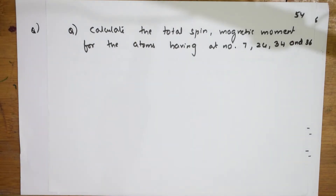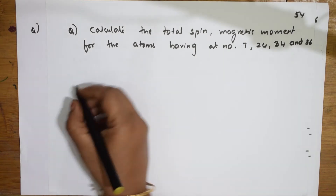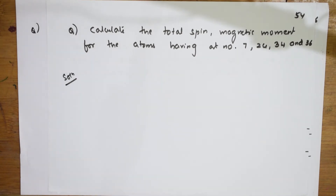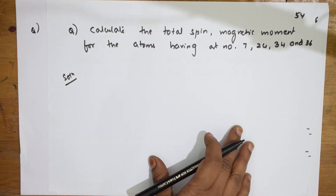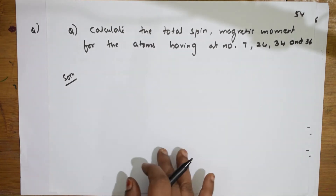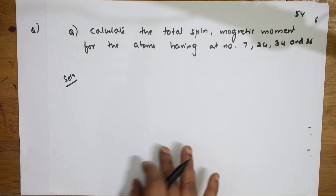Let us see this question which is based on quantum numbers and concepts together. They said: calculate the total spin quantum number, magnetic moment, and total spin. I need to calculate the magnetic moment (μ) for atoms having atomic number 7, 24, 34, and 36. As soon as atomic numbers are given, try to write the unpaired electrons, then put them into the magnetic moment formula: root of n(n+2).